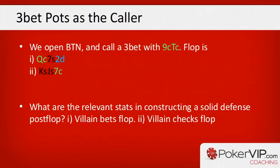Always look at the stats for the next street — maybe even two streets ahead. In an extreme example, our opponent might not bet-fold the flop much, mainly bet-calls, and maybe doesn't fold to turn barrels, but he folds to river barrels very frequently. To construct a complete game plan we must take into account how our opponent is playing on all streets.